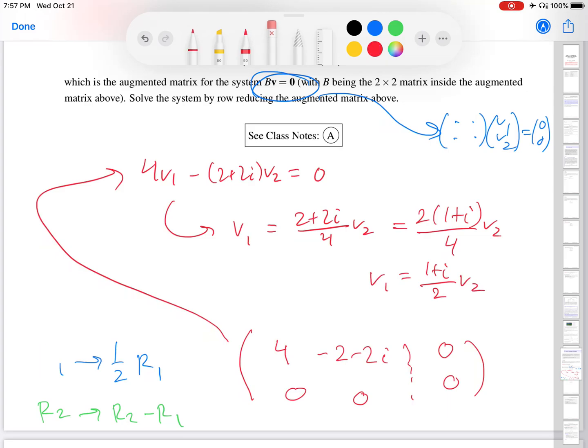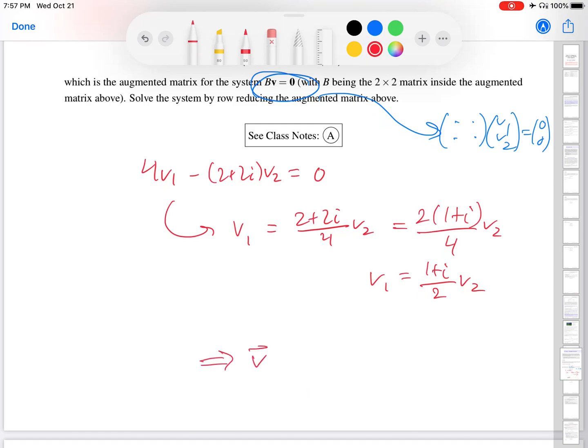OK, so I have my relationship between V1 and V2. It's only one relationship. I have no information about V2. So this tells me that my solutions V have the form, or they have the form V1 V2 to begin with. That's from up here. But now that I have determined what V1 is, it's 1 plus i over 2 times V2. OK, so I can do a few things here. We can express the solution in a variety of ways. What I'm going to do is factor out a V2 over 2.